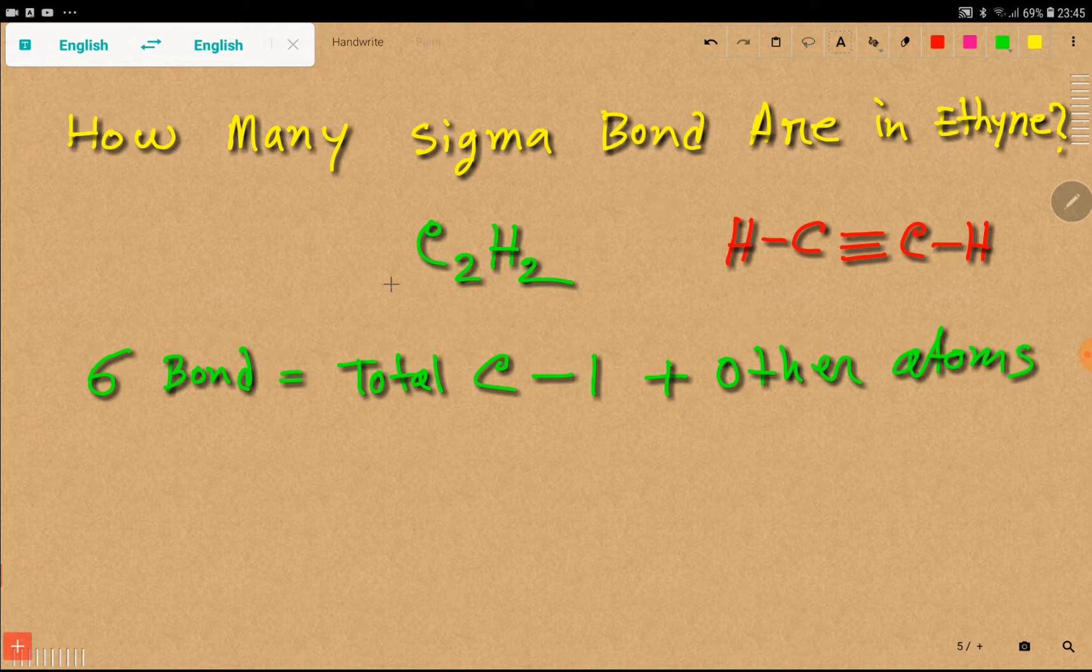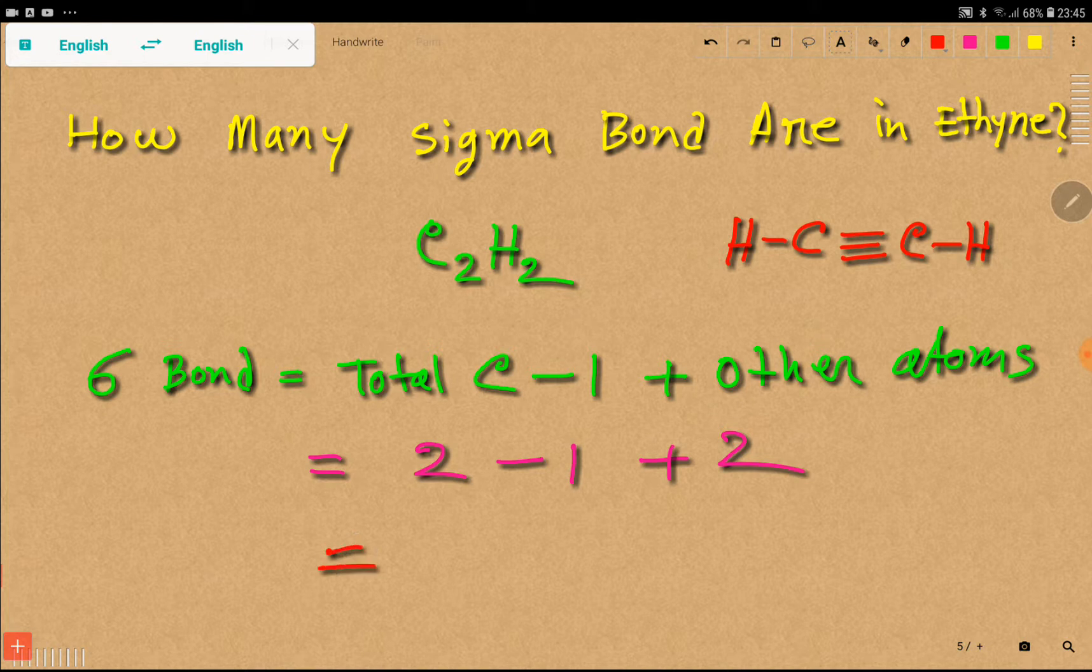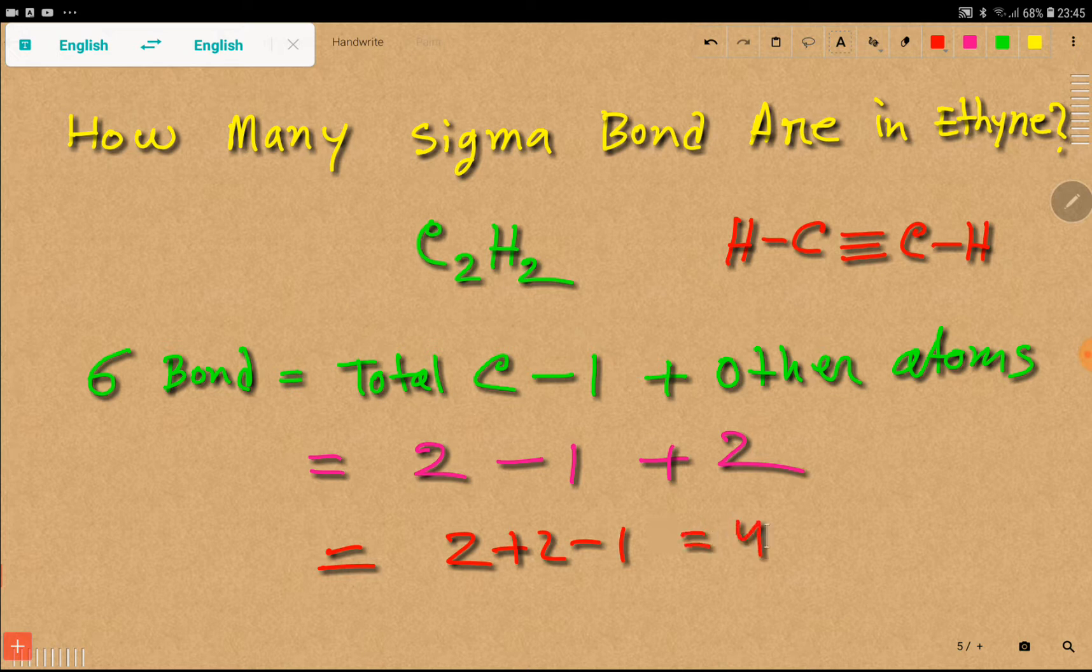So, for ethyne, look at here. We have two carbons. So, let me write the number of carbon. We have two carbon minus 1 plus other atoms. So, we have two other atoms. So, now we are getting... That is three.